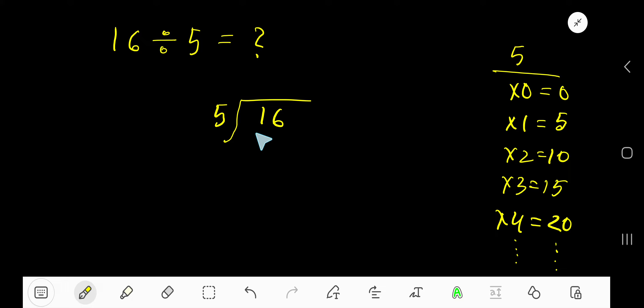Look, 5 goes into this 1 how many times? This 1 is less than 5, so 0 times. 0 times 5 is 0. Subtract 1, bring down this 6. Now we have 16 here. 5 goes into 16 how many times?